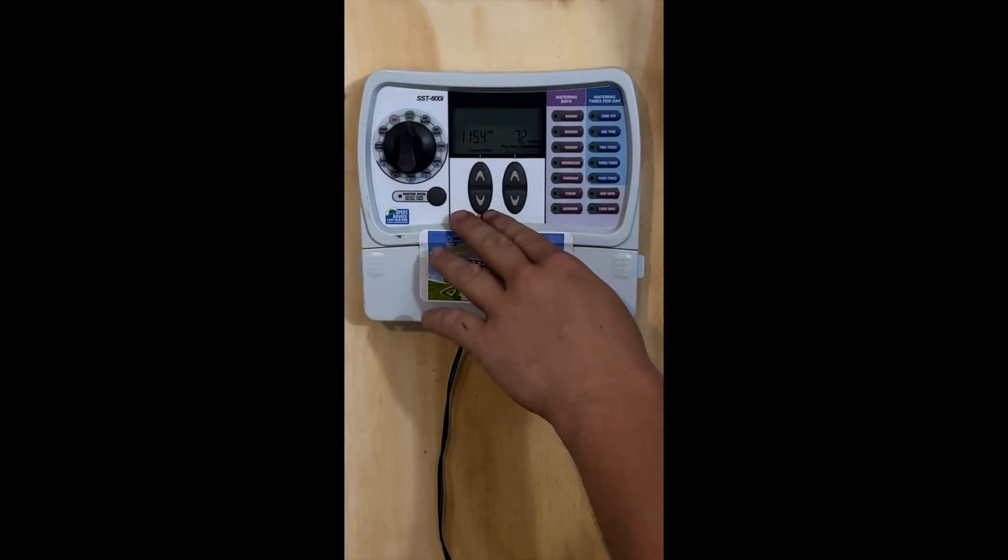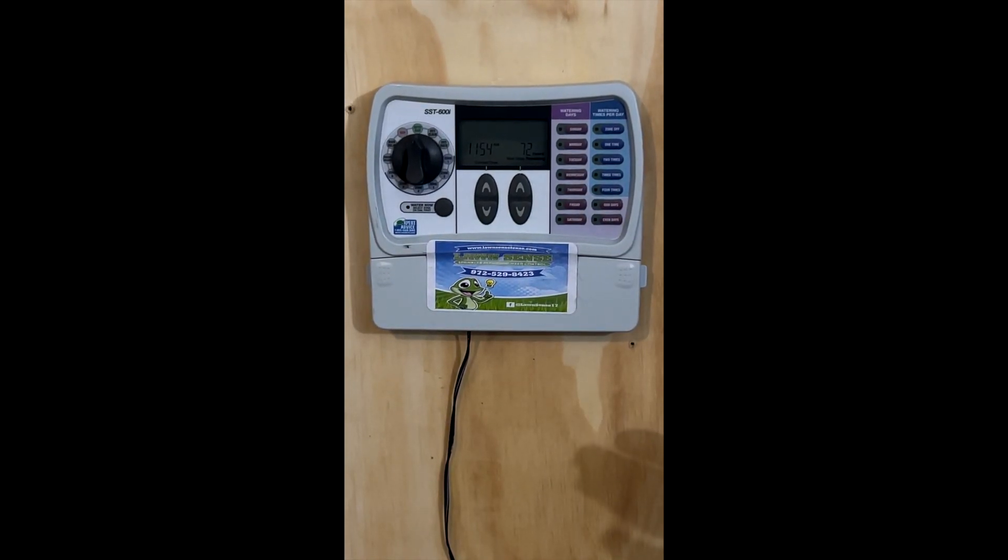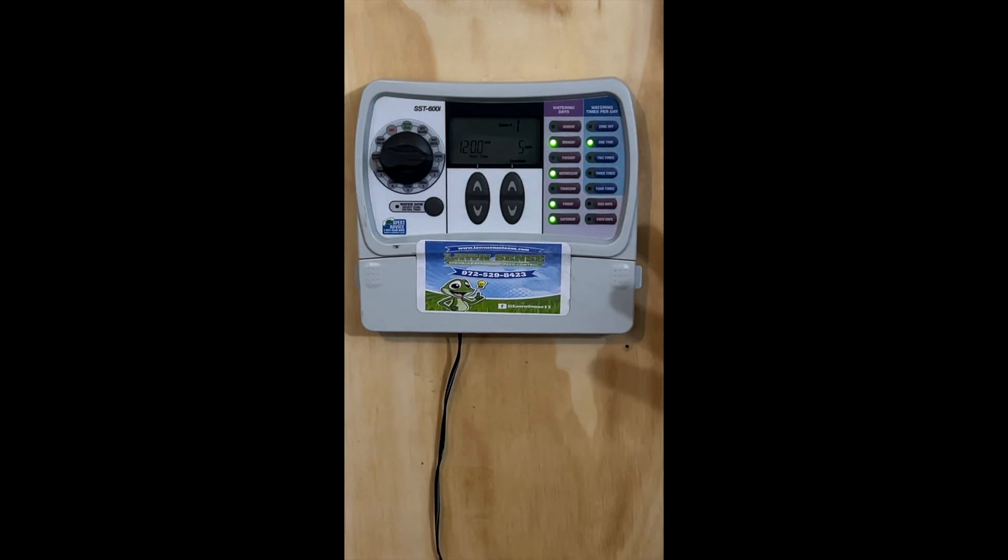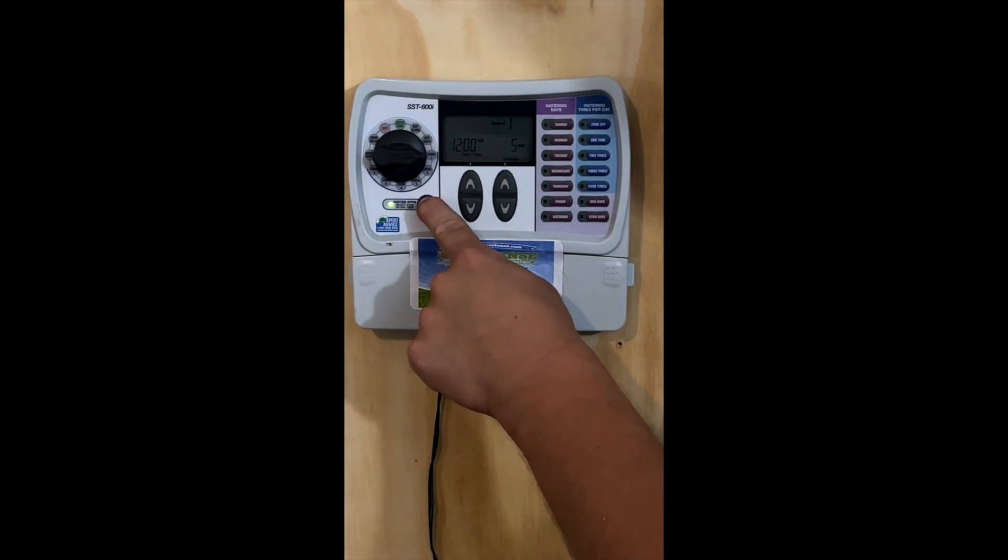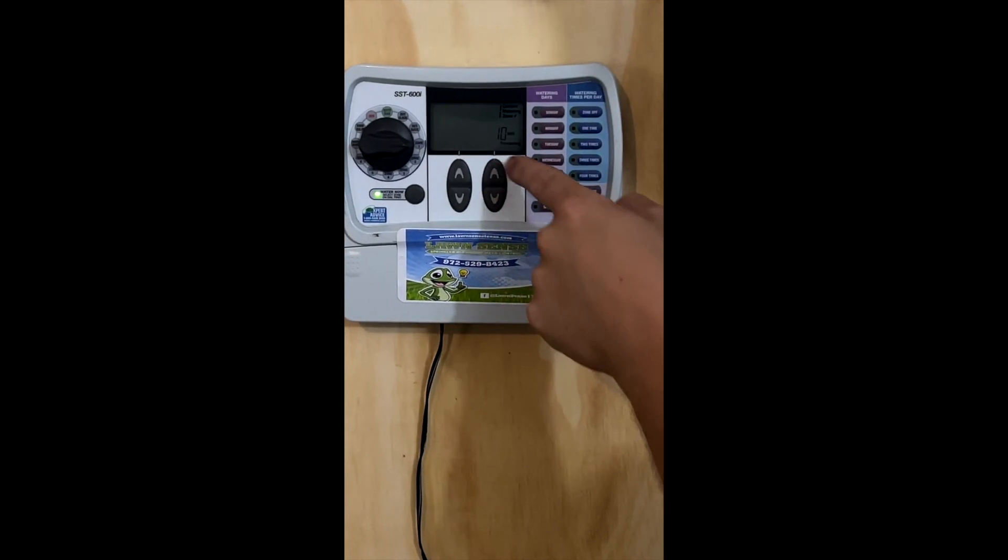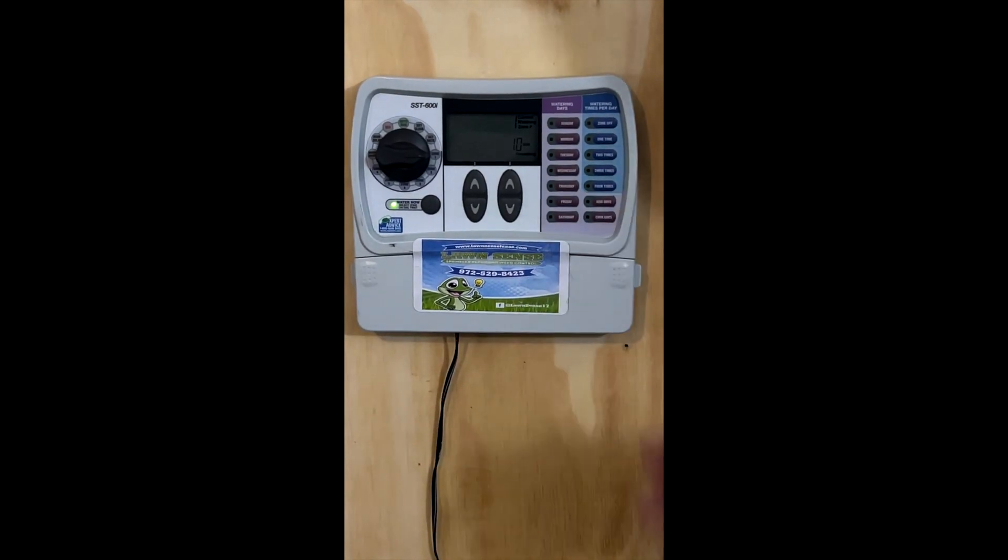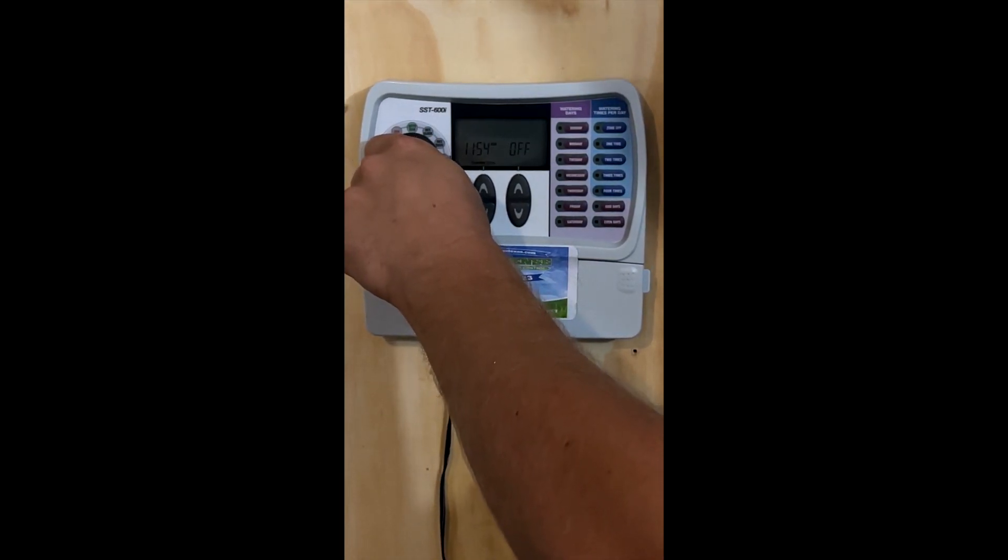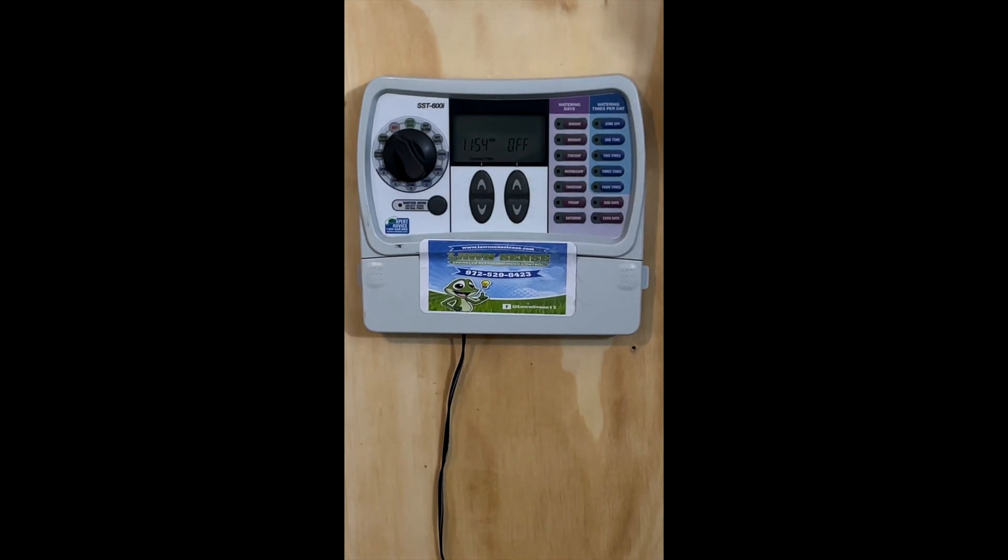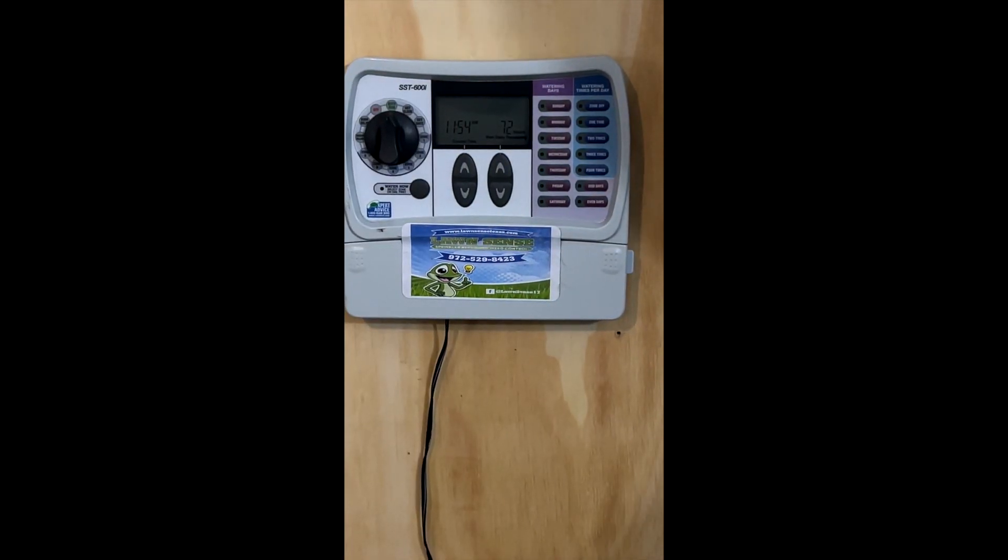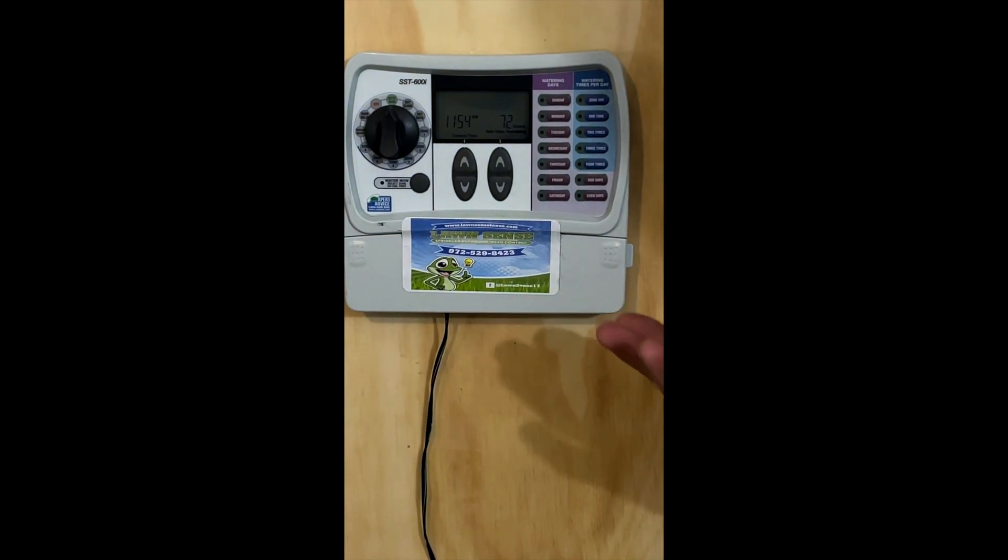And the last thing you need to know how to do is if you want to water a zone by itself, all you need to do is pick the zone that you want to run, you hit this Water Now button, and it'll say Current Watering, and it'll run that zone for the selected time that was there before we hit the button. Once you're done with it, you can flip it back to Off. Wait three to five seconds. It'll shut the zone off. And then once you flip the controller back, it'll resume the program that it had programmed.